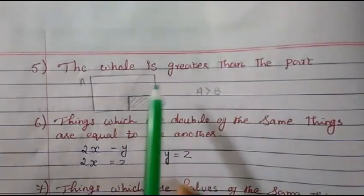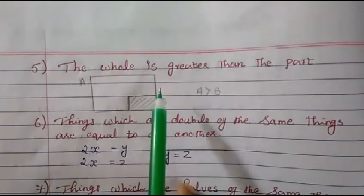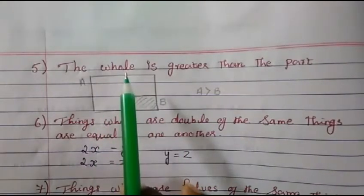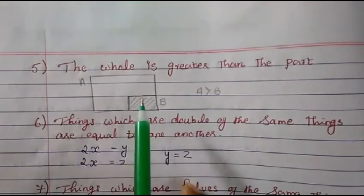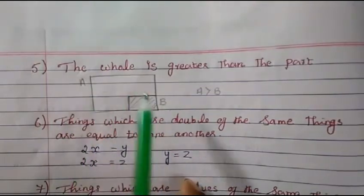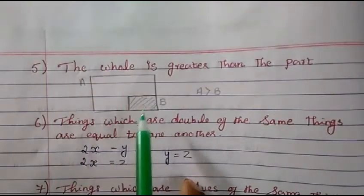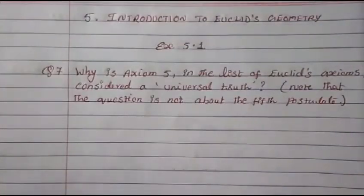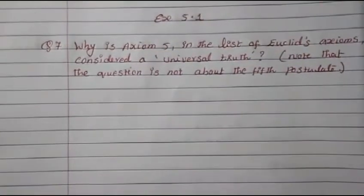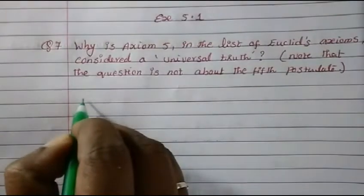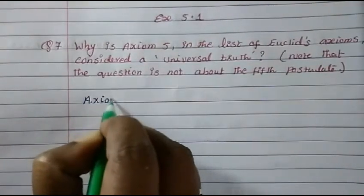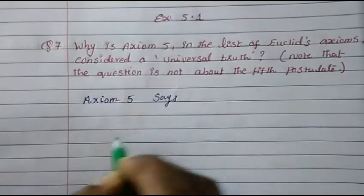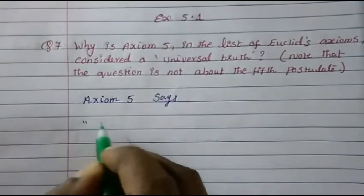This is a universal truth because universally it is accepted — nowhere will you see a case where the part is greater than the whole. Therefore, universally it is accepted that the whole is greater than the part. That is what we have to answer in this question. So let's write it down. Axiom 5 says: the whole is greater than the part.